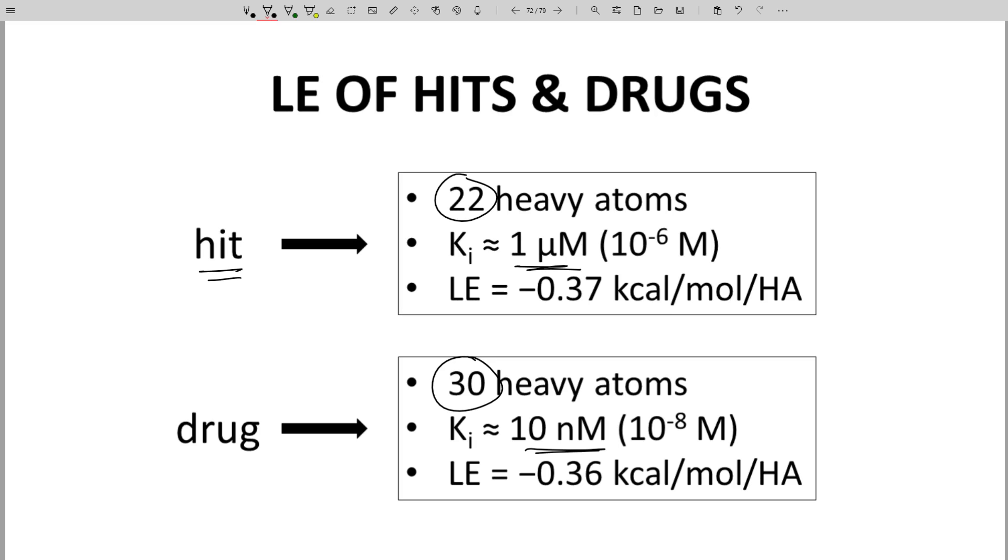This is interesting. Pound for pound, or gram per mole per gram per mole, hits, leads, and drugs have about the same ligand efficiency. The atoms in the hit or lead are contributing to binding, and the additional atoms should contribute to binding in a proportional manner as the molecule is optimized.